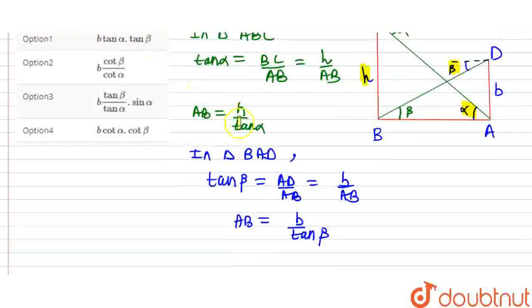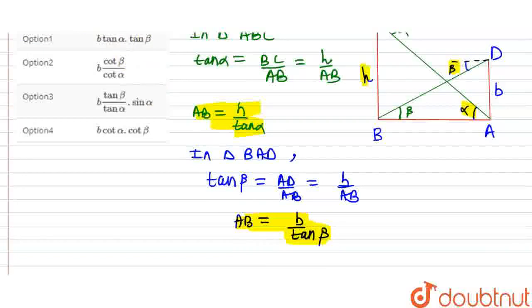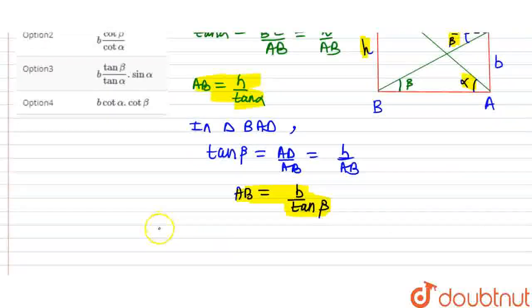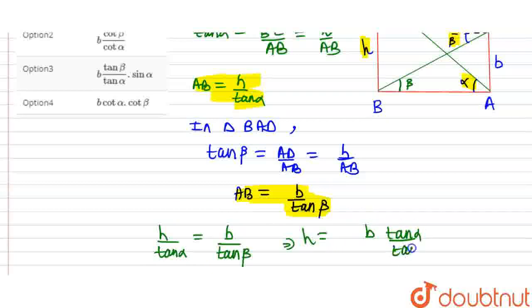So as you can see, one AB is here and one AB is here. So we will equate both AB. So the value of AB will be H upon tan alpha equals B upon tan beta. So the value will be B times tan alpha upon tan beta.